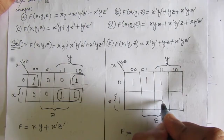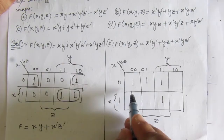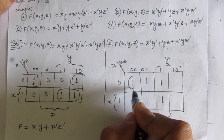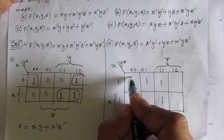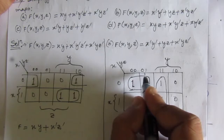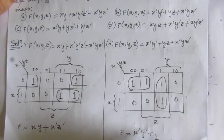For the third term x̄yz̄: x bar is this row, y corresponds to these two columns, and z̄ is this column. Since we already placed 1 in that box, we need not write again. Combining the groups, we get x̄ȳ plus yz. That is the solution of the second part.